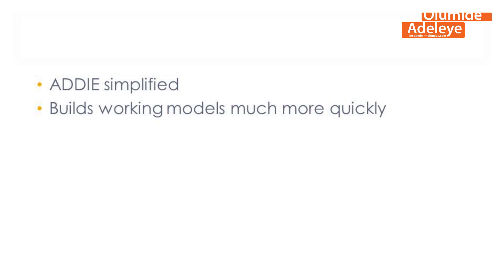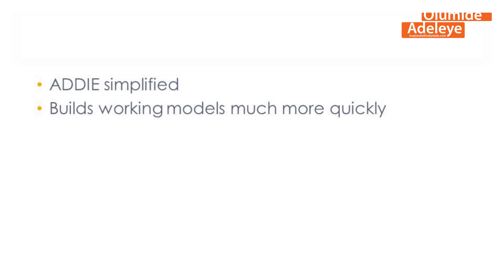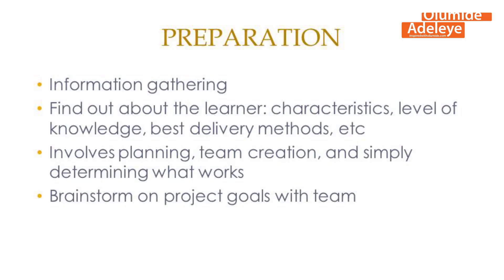The Successive Approximations Model is really made up of three key steps. The first step is what is known as the preparation stage. In the preparation stage, you have more or less what you would have in the analysis phase of ADDIE. You do all the necessary preparation, gather the needed information for the project, the context for the project, and all the things that are needed. At that stage also, you begin to sketch, to brainstorm, and to think about ideas for prototyping.